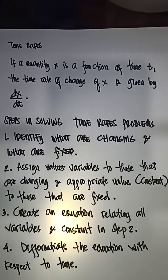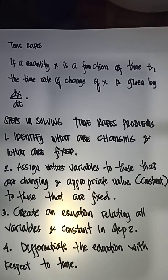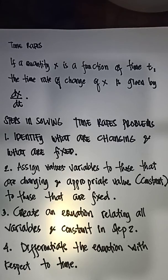Steps in solving time rates problems: number one, identify what is changing and what is fixed in the given problem. Number two, assign variables to those that are changing and appropriate constant values to those that are fixed. Number three, create an equation relating all variables and constants from step two. Number four, differentiate the equation with respect to time.